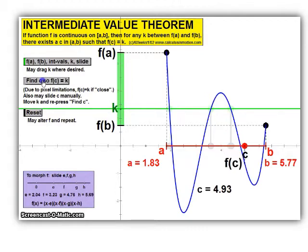So it looks like we actually have three locations where that exists. So right in this location, and in this location, and in this location. If we reset this and change the equation, then we can see another example of this.